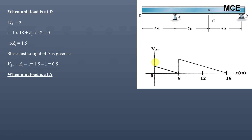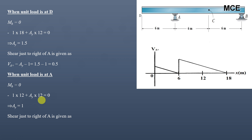To find the ordinate at A (6 meters) for shear just to the right of A, we place the unit load at A and take moments about B equals zero. The moment of the unit load about B is 1×12 (anti-clockwise) and the moment of AY about B is AY×12 (clockwise). This gives AY equal to 1. Cutting a section just to the right of A, only AY acts, so the shear equals 1. The ordinate when the unit load is at A is 1.